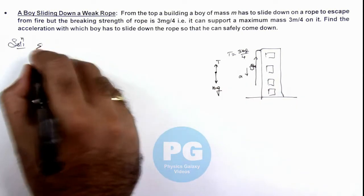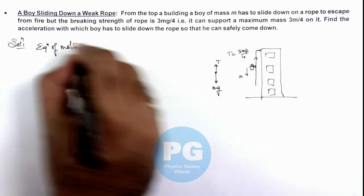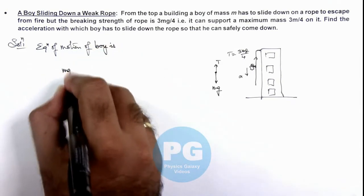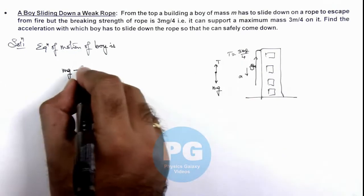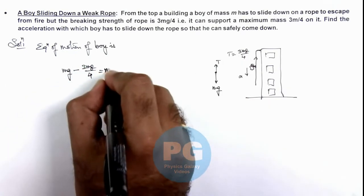We can write the equation of motion of the boy. This can be written as mg minus T, and tension we can write as 3mg/4, is equal to ma.